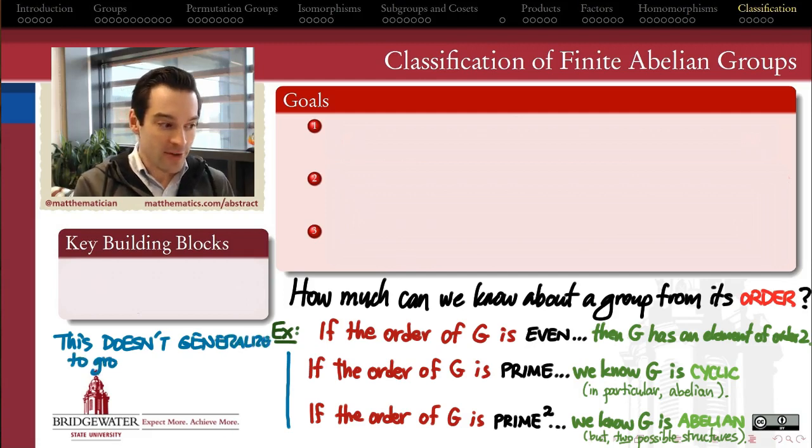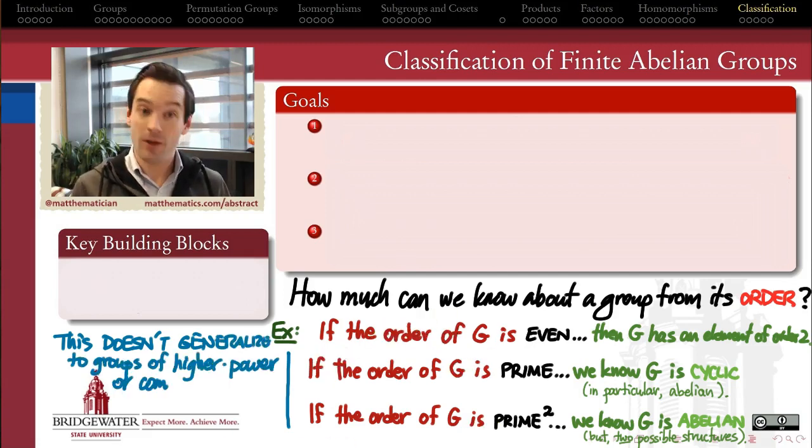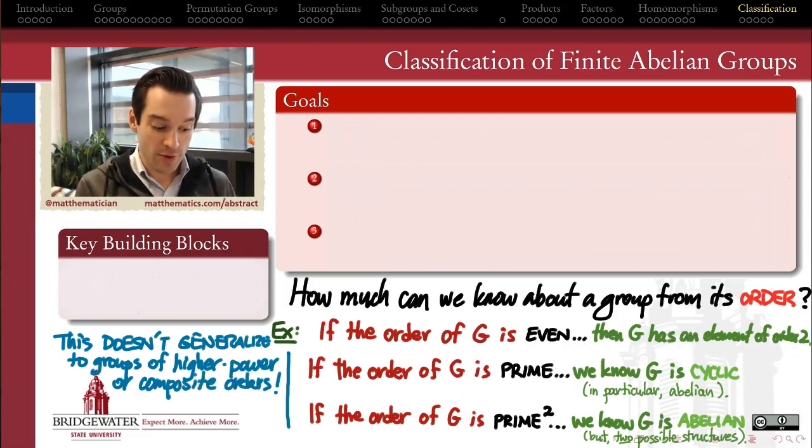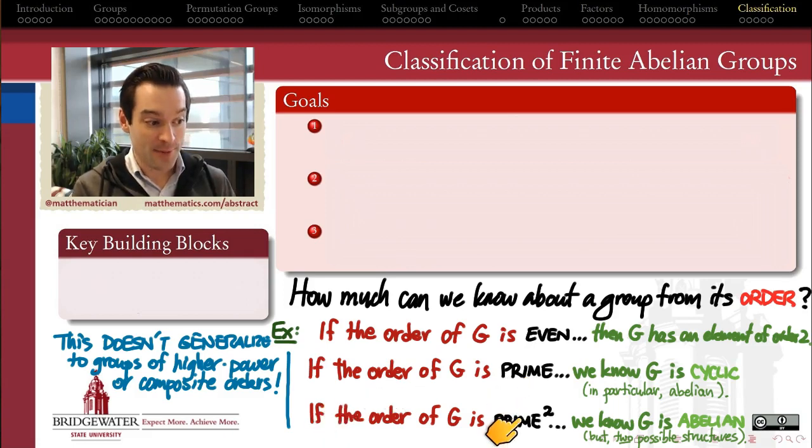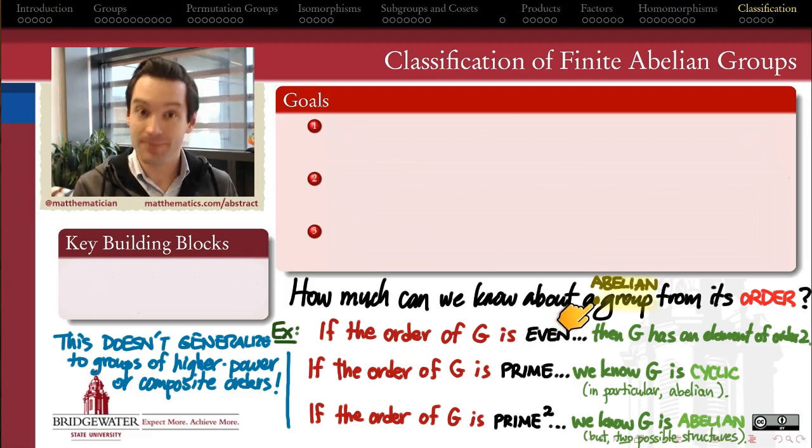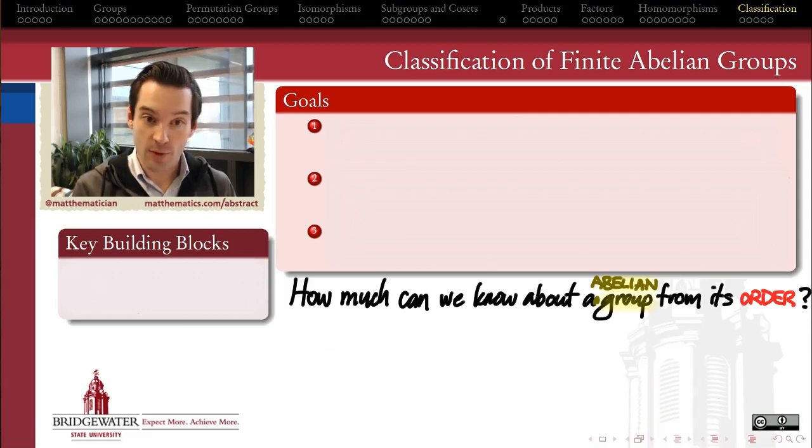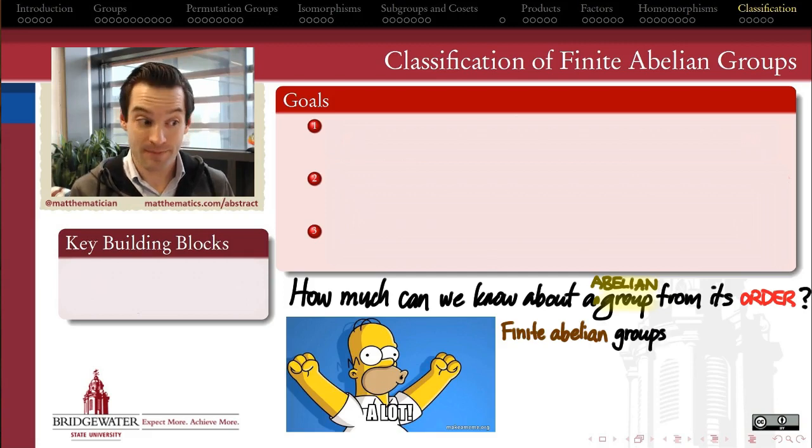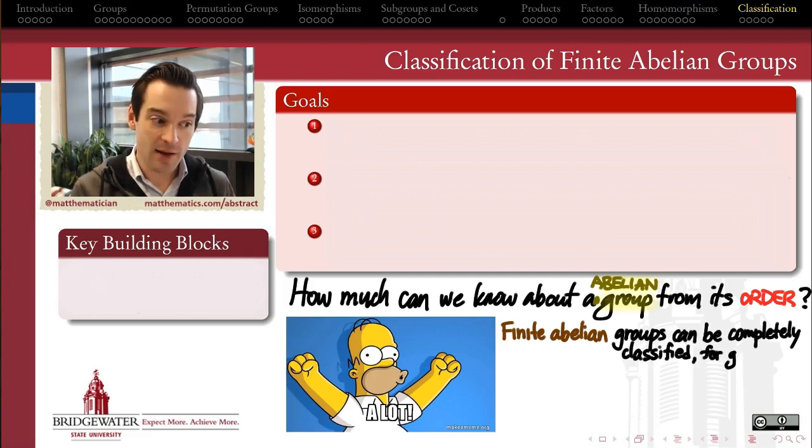So what's the flavor? The flavor is that these results don't generalize very well. If I know the order of G is even, then G has an element of order 2. All right, but what if the order of G is not even? What if I want to know about elements of other orders? We don't have a nice generalization for that. And if I increase the number of primes—if the order of G is a prime cube, prime to the eighth, or composite, made up of multiple primes—there's not really a way to capture the generalizations until we add the word abelian and say we will be able to classify those groups that are abelian and whose order is finite. Turns out we can say a lot about the groups that are abelian just based on knowing what their order is.